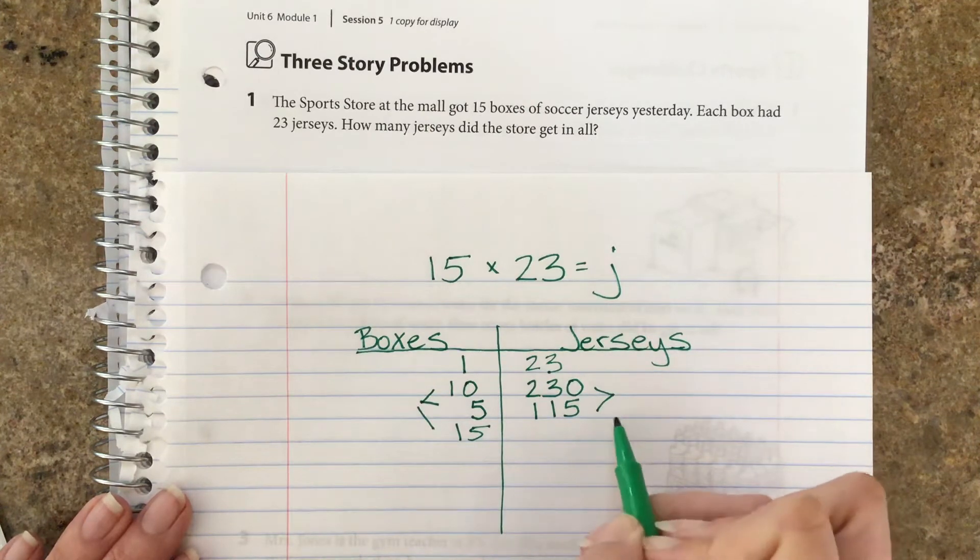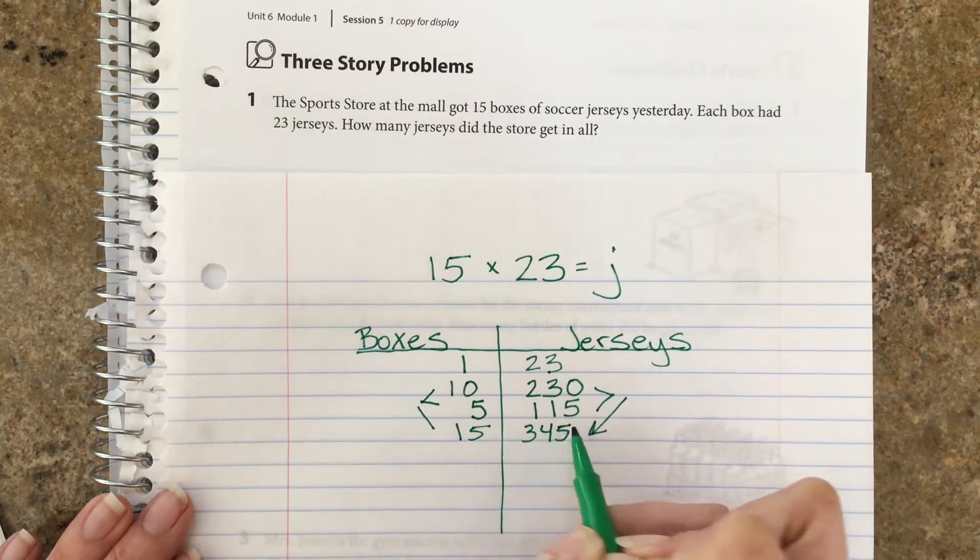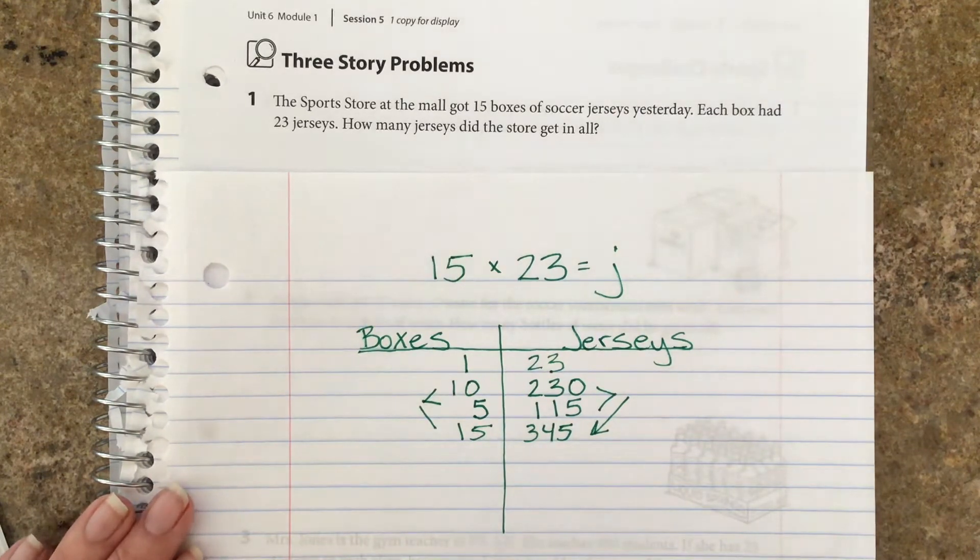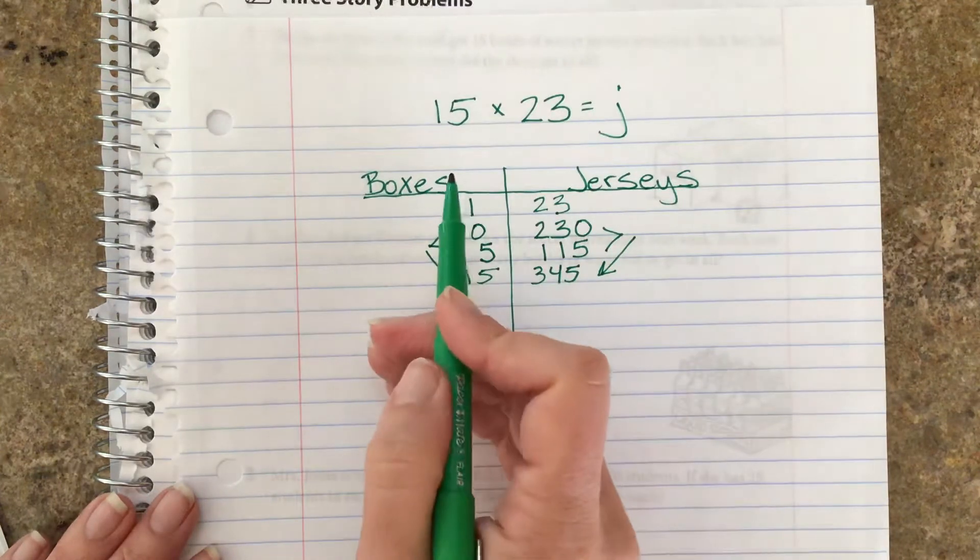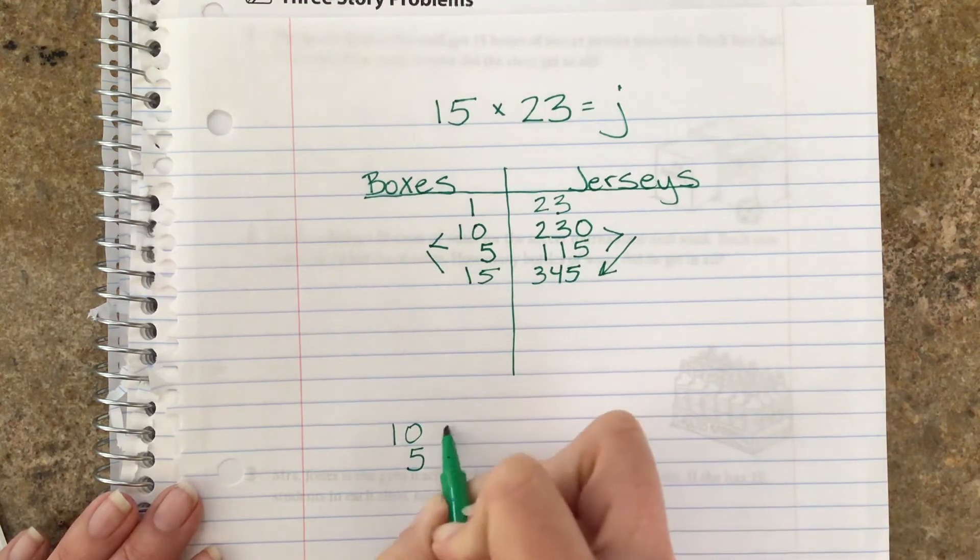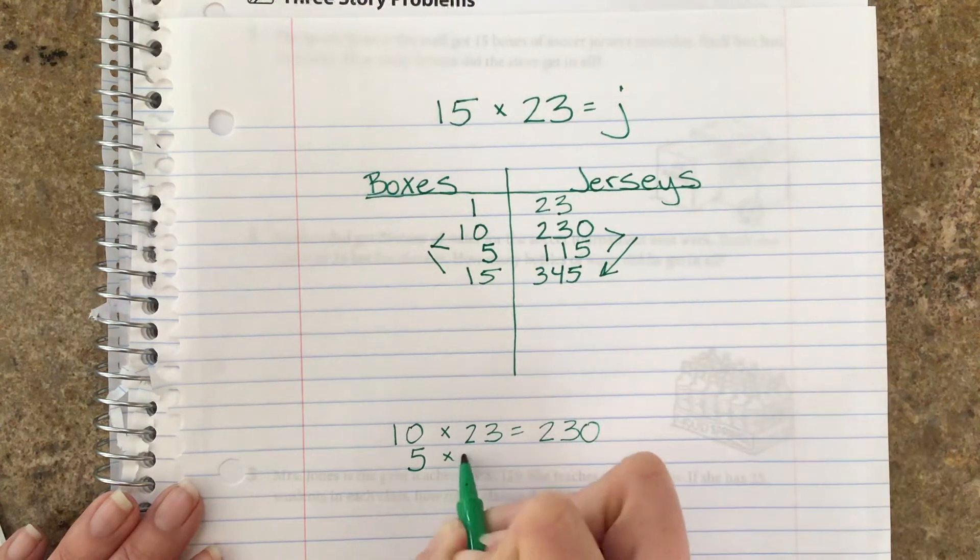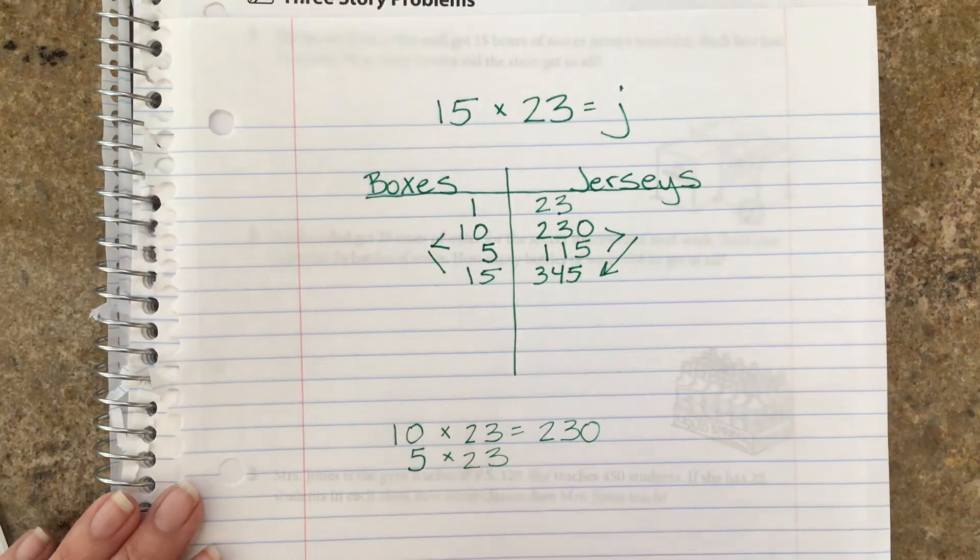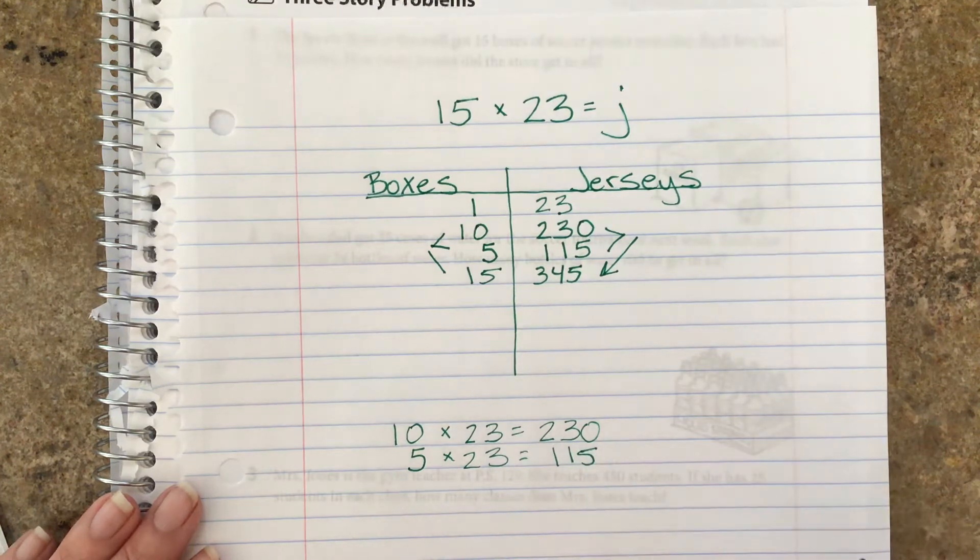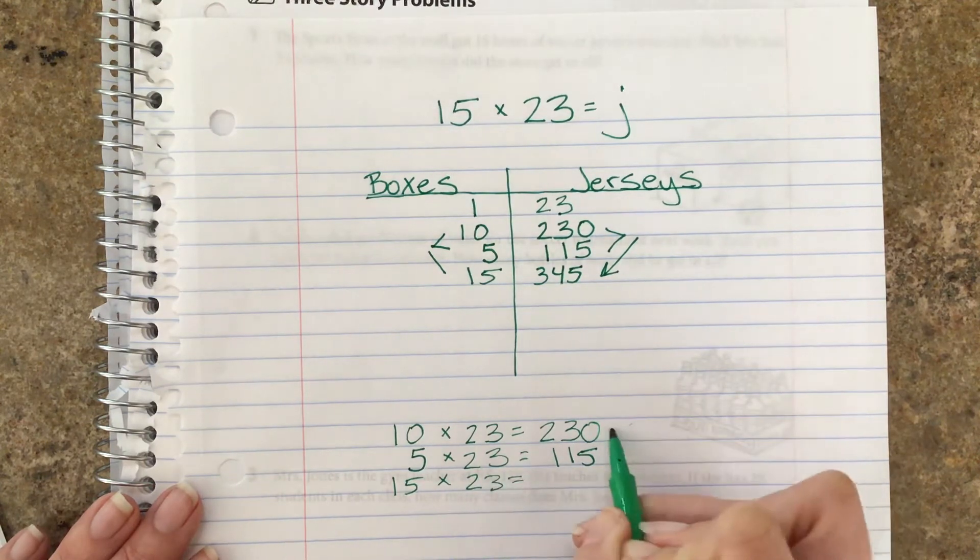So if I take these two together, 10 plus 5, that's 15. If I take these two together, I add 230 plus 115, I'm going to get my answer: 345. 345 jerseys. Is that what you got? Did you do it a different way? Maybe you broke apart the 15 into 10 and 5, and you did 10 times 23 is 230, and 5 times 23, we're using the 5 is half of 10 strategy, so half of 230 is 115.